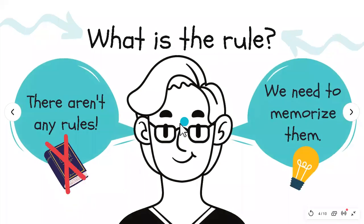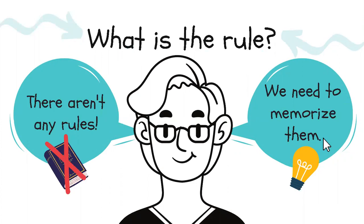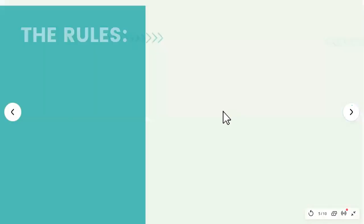In the negative form, we're going to see just now, but just remember this: what is the rule? There aren't any rules. We need to memorize them. No hay reglas — por lo menos en la forma positiva no hay reglas, solamente tenemos que memorizarlos. Que 'go' es 'went', que 'see' es 'saw', que 'cut' es 'cut', and so on. We have a lot more examples. And here we have the negative form.